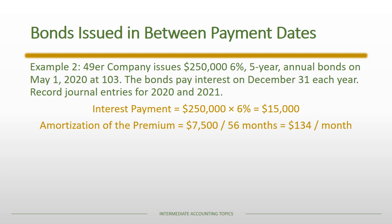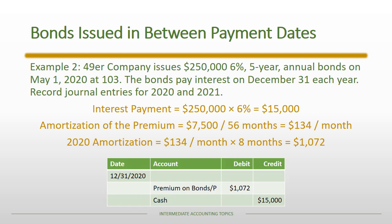The life of the bond is 56 months — even though it's a five-year bond, the fact is it's only outstanding for 56 months. One approach is to figure out the monthly amortization and then multiply by however many months there were in a period. In this first year there are eight months of amortization, so in 2020 you take the monthly amortization and multiply it by eight months, which gives a total premium amortization of $1,072 in 2020.